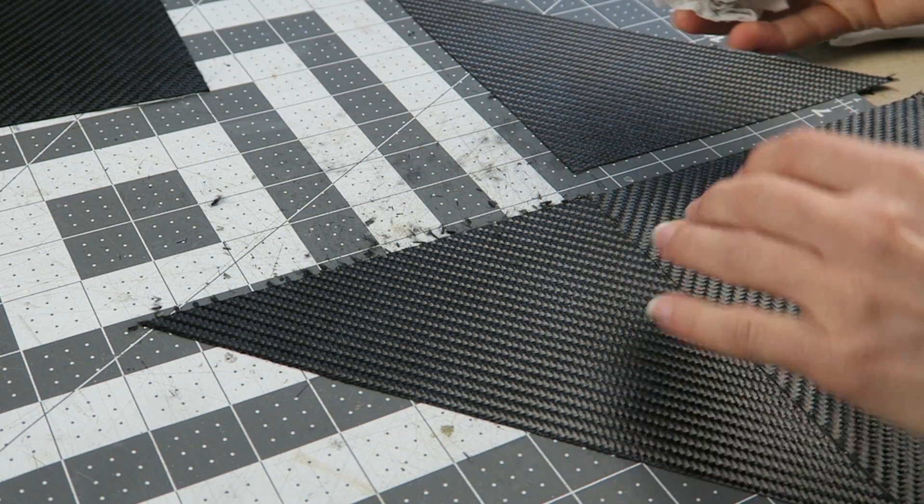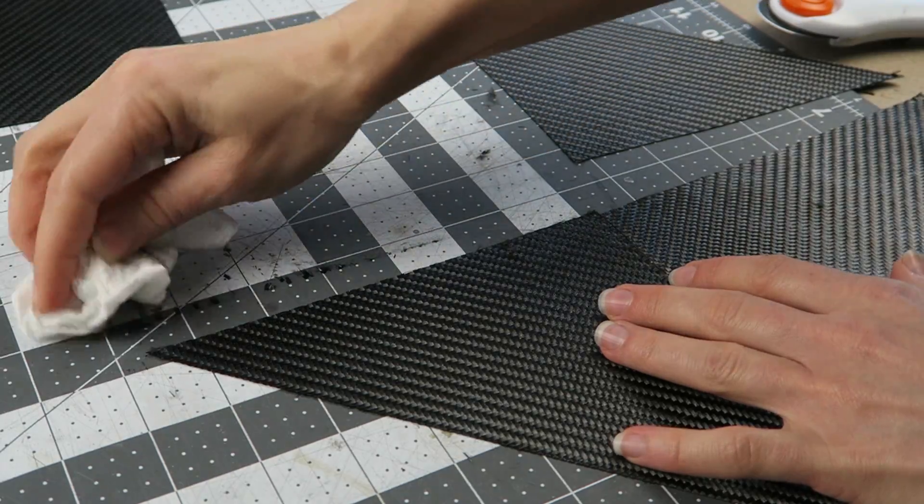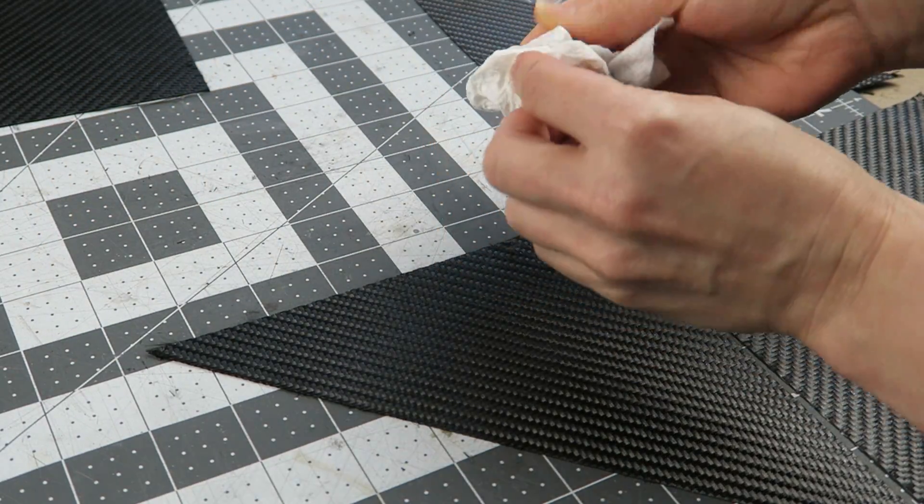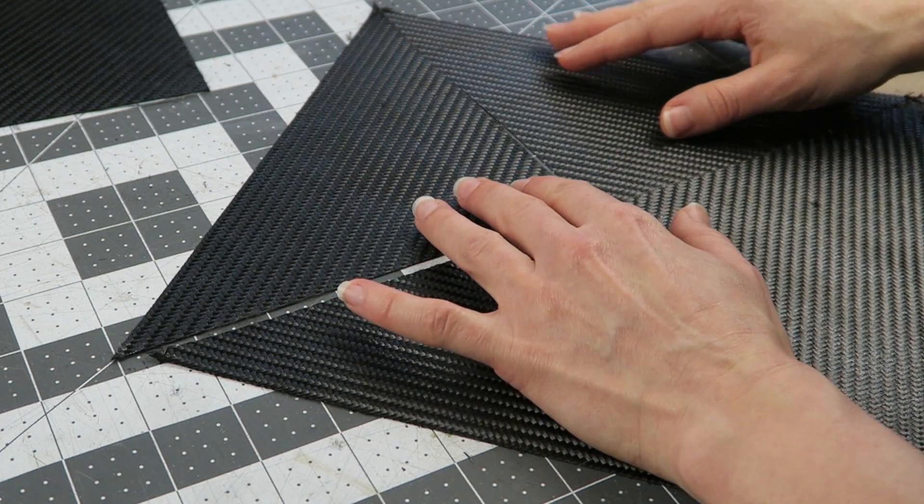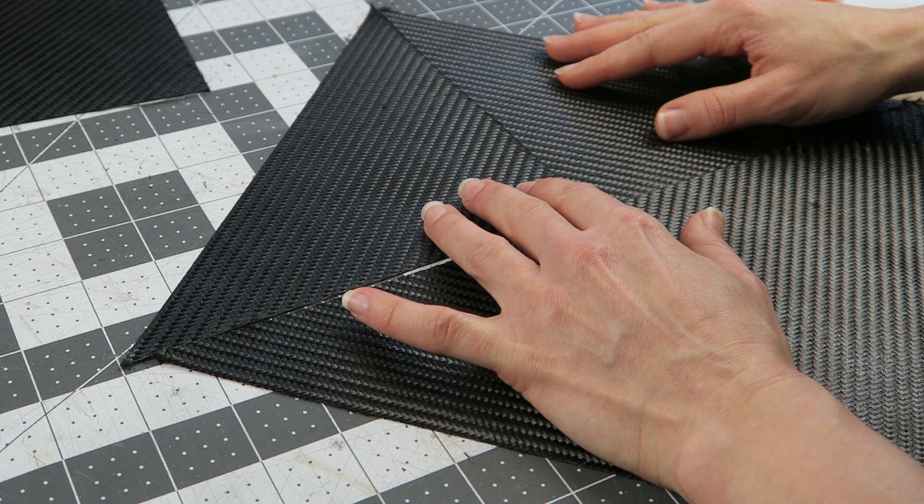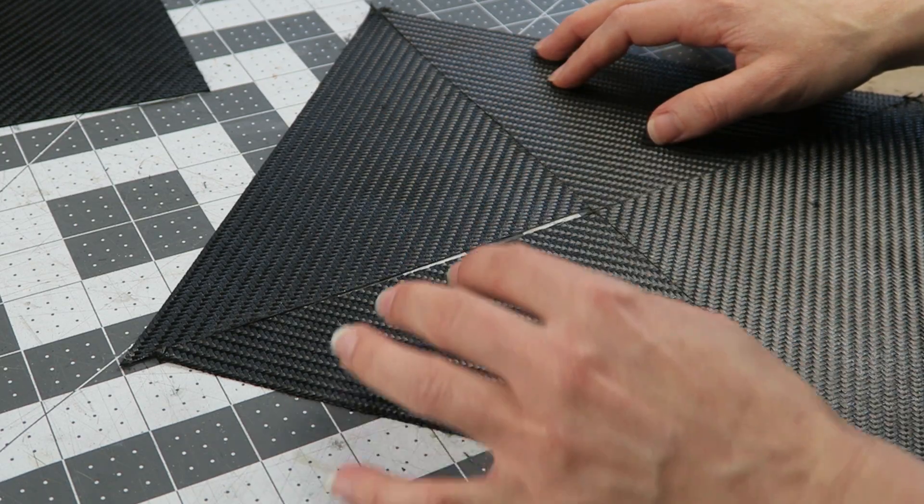You have to clean that up afterwards. Otherwise, all of those bits are going to get everywhere. You don't want to breathe that. You don't want that getting mixed in with your carbon fiber final pieces, because that's going to end up showing on the final piece if there are lumps of stray fibers. That's all pretty well aligned. Time to move on to the next fabric.